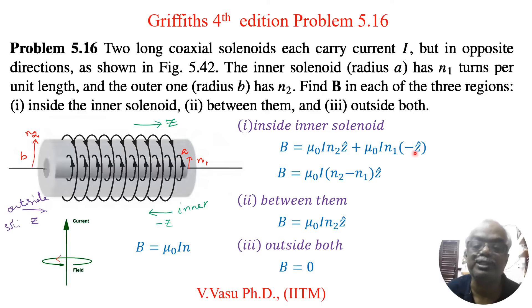So if you add both this minus will come here. So mu naught I (n2 minus n1) Z hat. This is inside the inner solenoid.